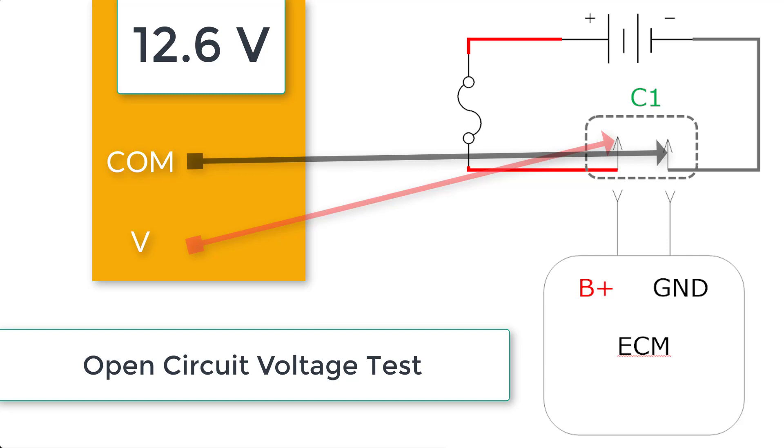In our test here we can see that we have power and ground. We got 12.6 volts, which indicates that there is not an open in the ground side of the circuit or in the power side of the circuit. We haven't fully tested whether or not there's a problem with the power and ground circuit. All we verified with this open circuit voltage test is that there is not an open in the ground or power going to this ECM.